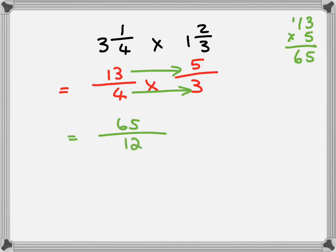Now we're going to make it into a mixed number. 12 will go in there 5 times. So it's remainder 5 over 12.